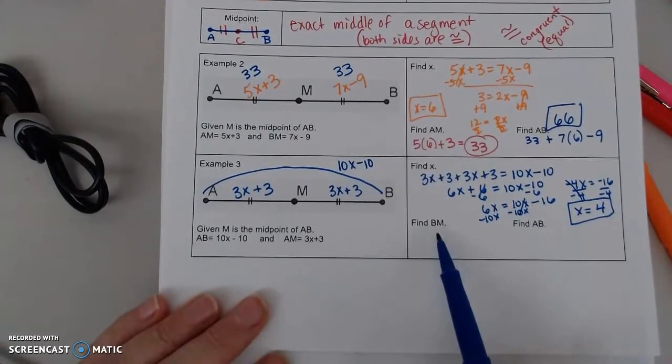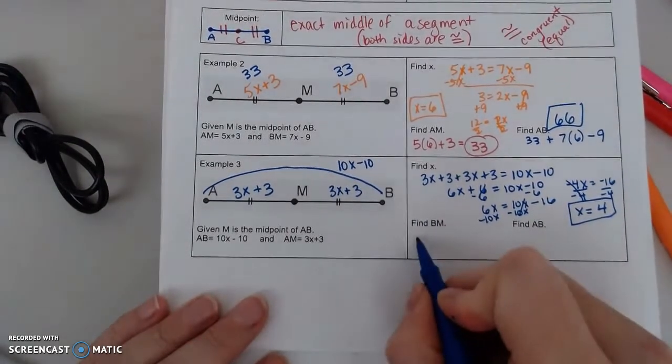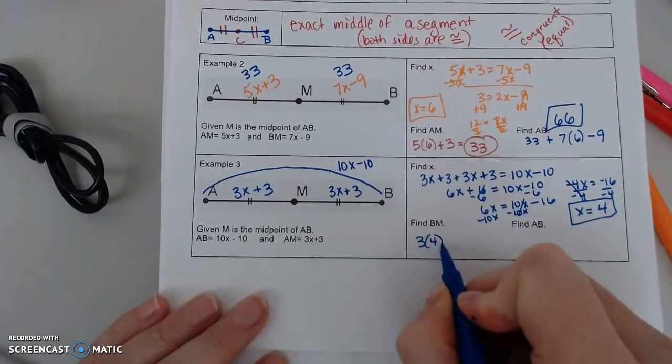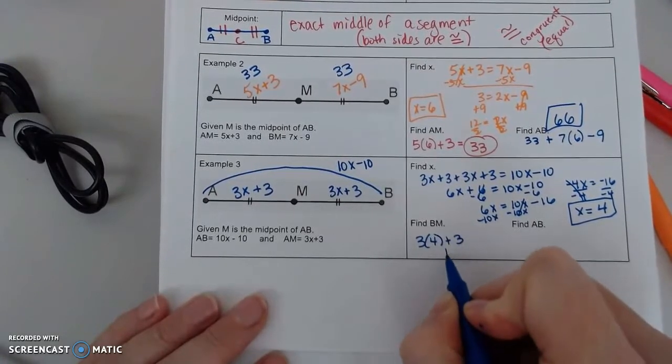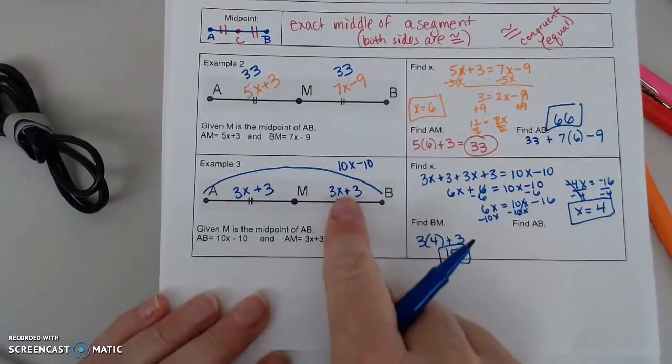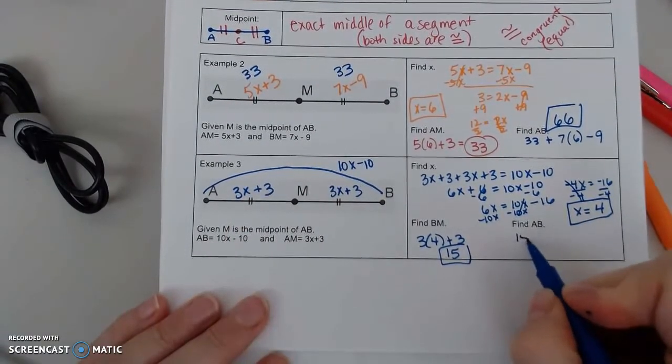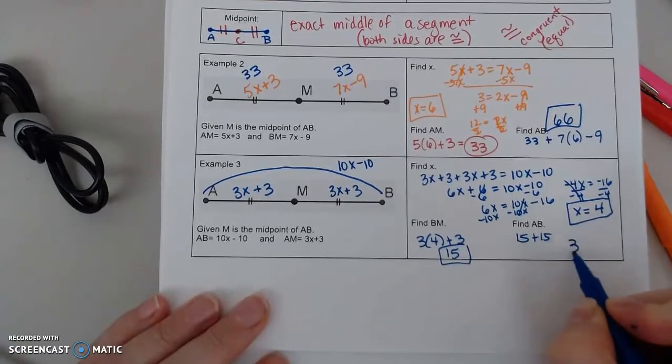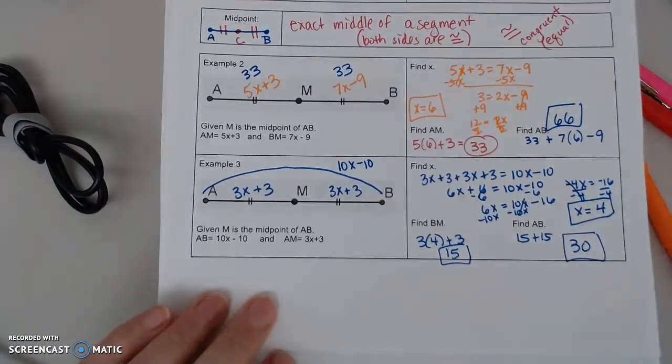So if I want to find BM, that's 3X plus 3. So 3X plus 3, 12 plus 3 is 15. They want AB, so if that's 15, that's 15. We get 30. All right.